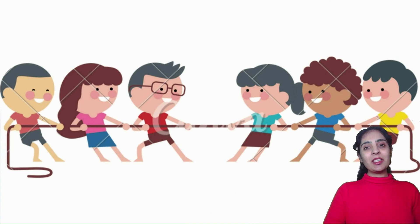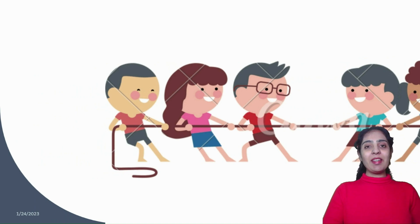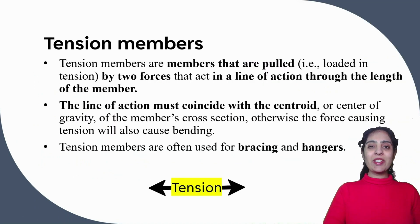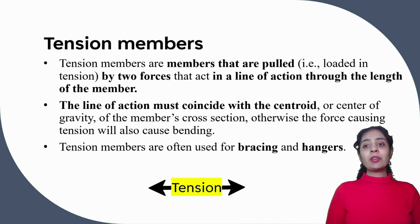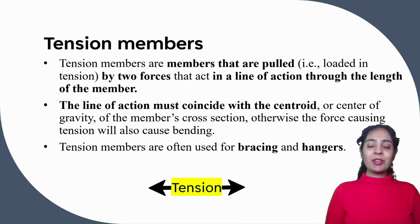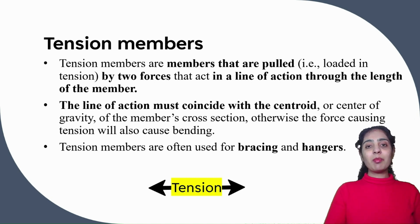You might have played tug of war in your childhood. In that game, the rope is in tension. Tension members are the members that are pulled by two forces that act in the line of action through the length of the member. The line of action must pass through the center of gravity; otherwise, that force may cause bending. Tension members are mostly used as bracings and hangers.